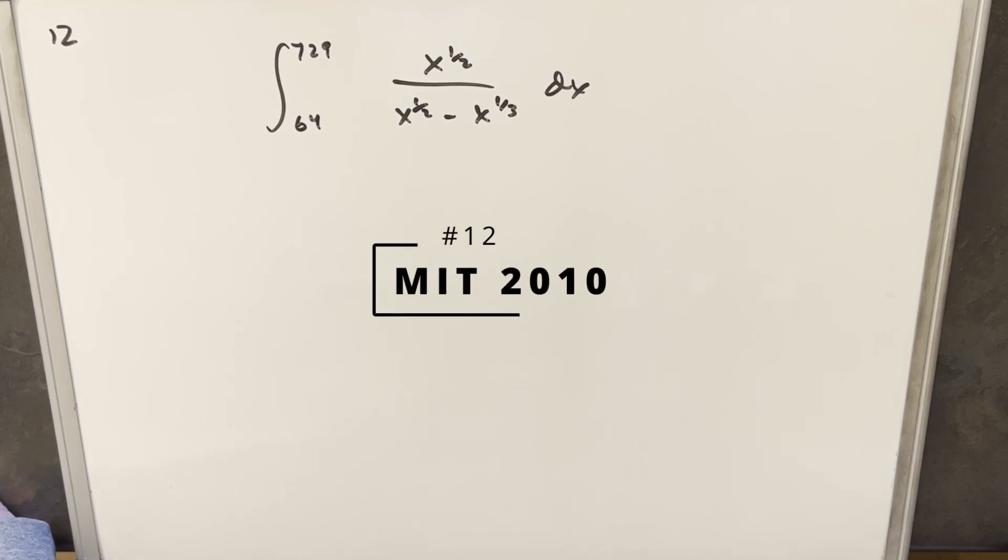Hey, we have here today another integral from MIT Integration B 2010, problem number 12. We have this integral from 64 to 729 of x to the 1/2 over x to the 1/2 minus x to the 1/3 dx.